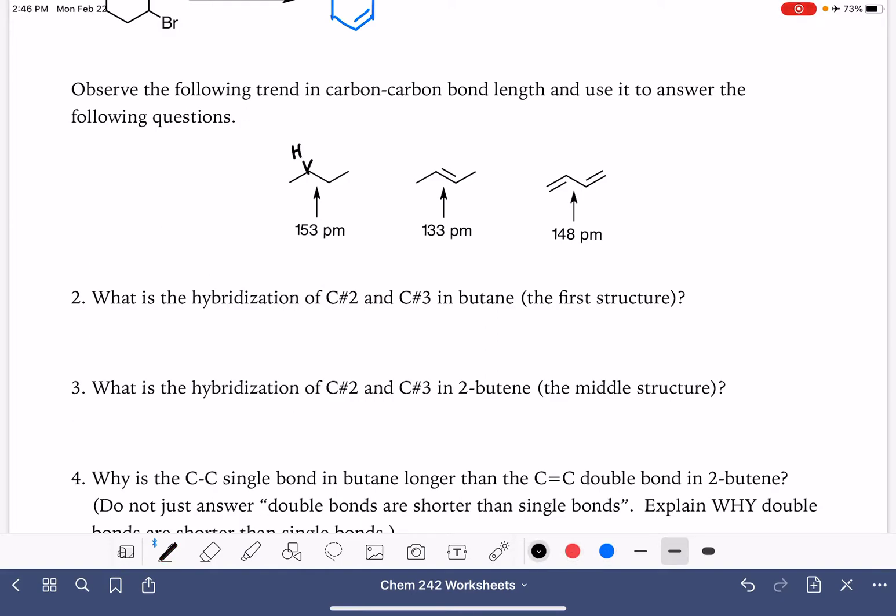I'm going to draw the hydrogens on carbon number two. This carbon has one, two, three, four bonds and four areas of electron density around it, which makes it an sp3 hybrid, same as carbon number three, also an sp3 hybrid.